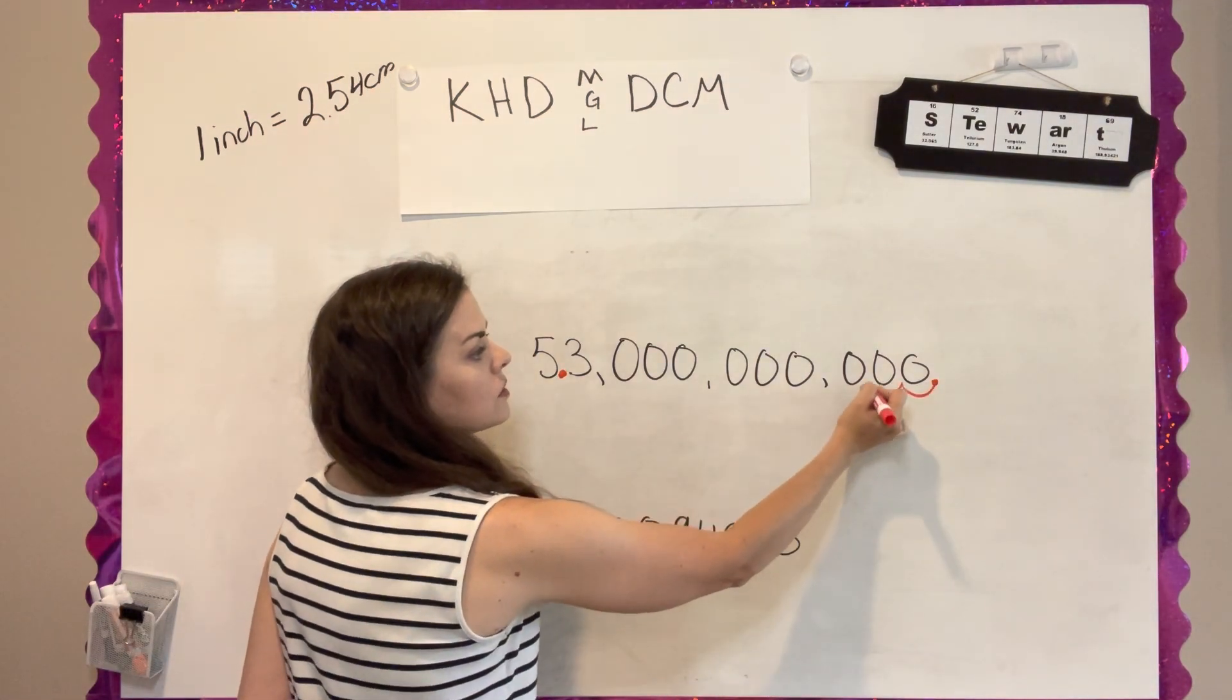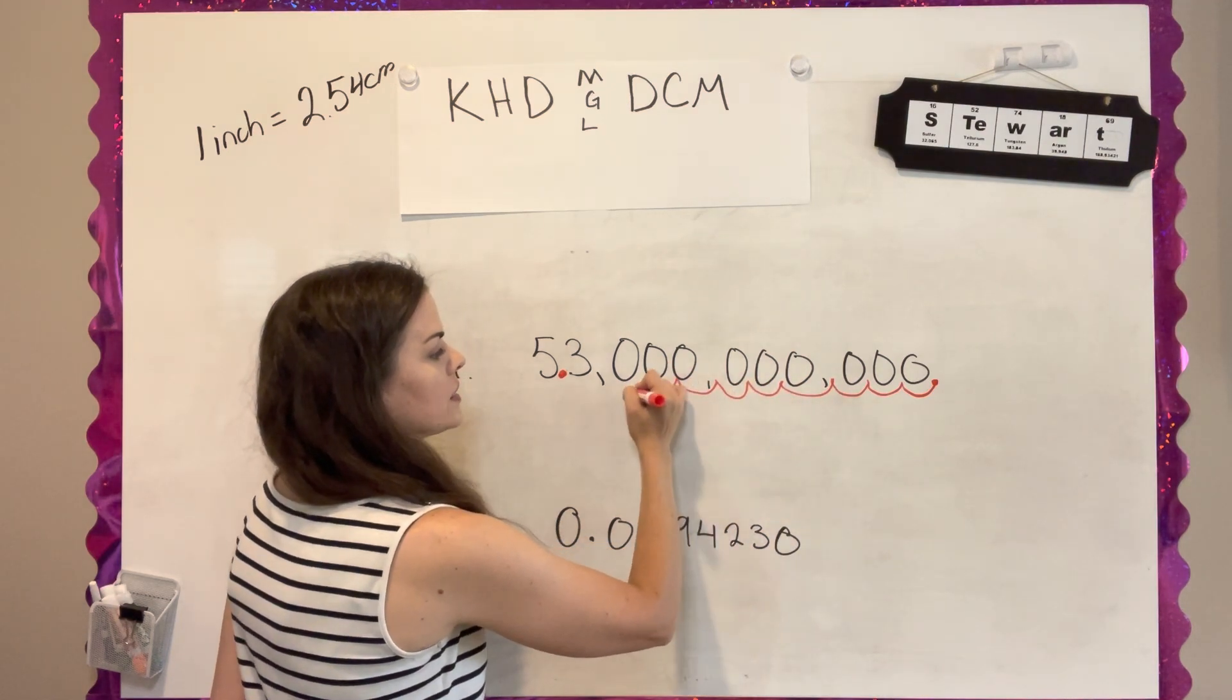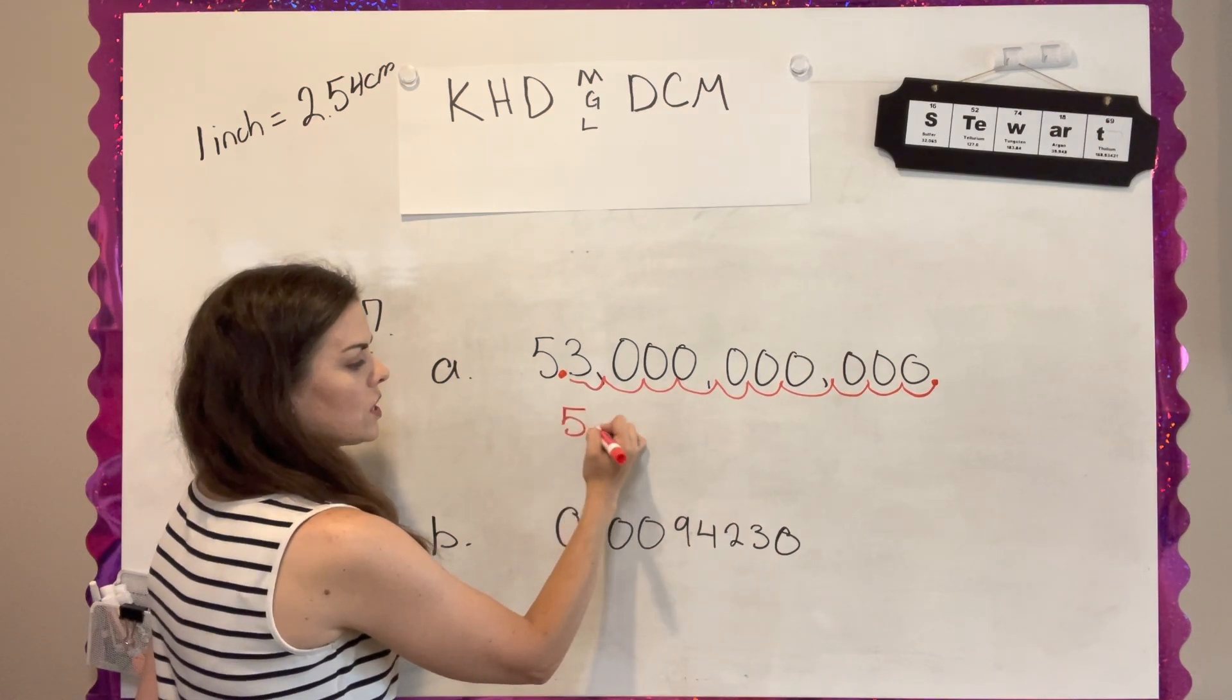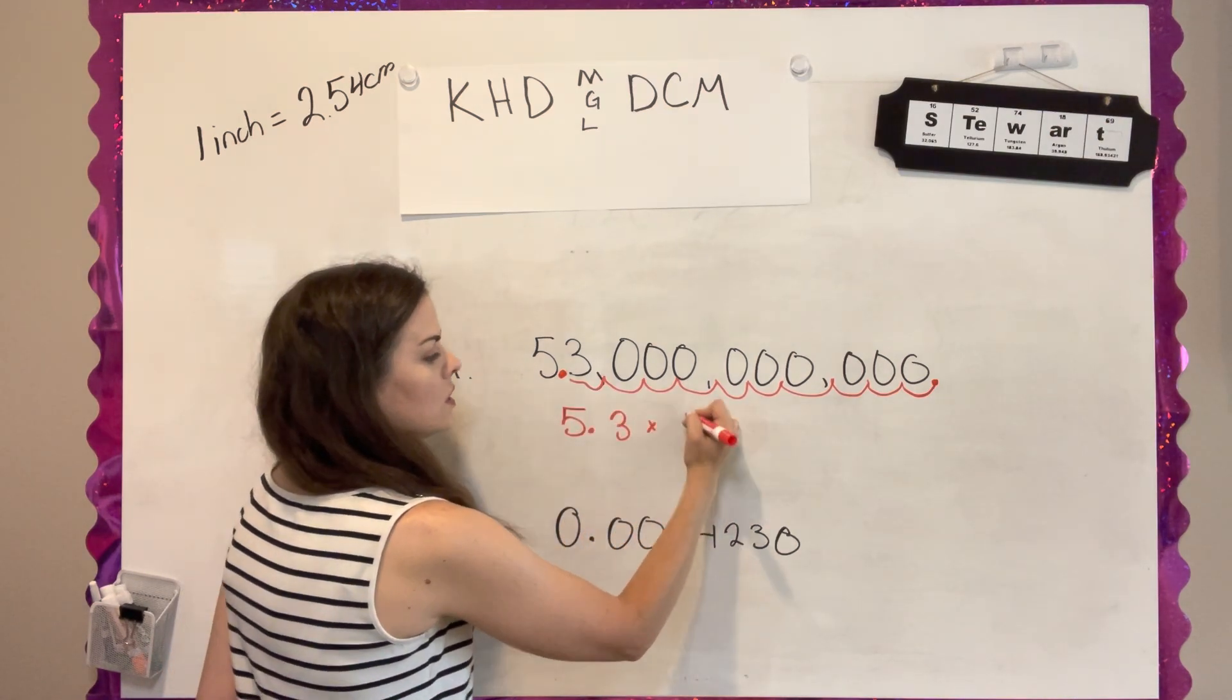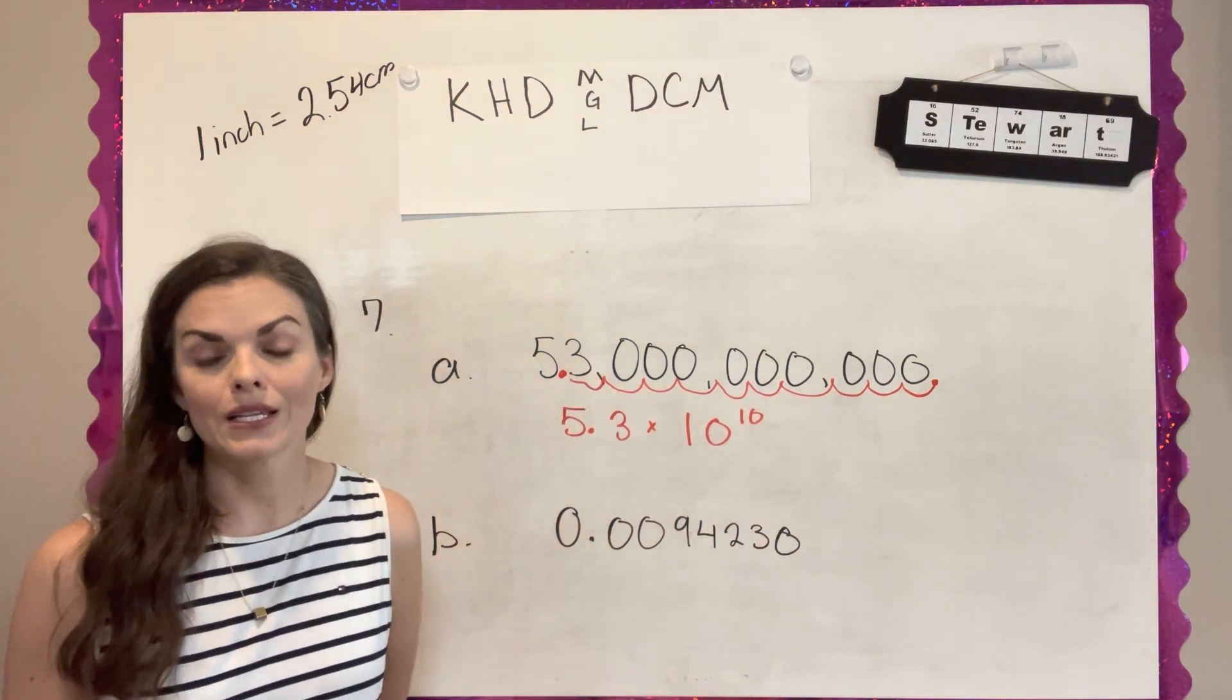So it would be 1, 2, 3, 4, 5, 6, 7, 8, 9, 10. So to write this as scientific notation, it would be 5.3 times 10 to the 10th power because that's how many times I moved my decimal.